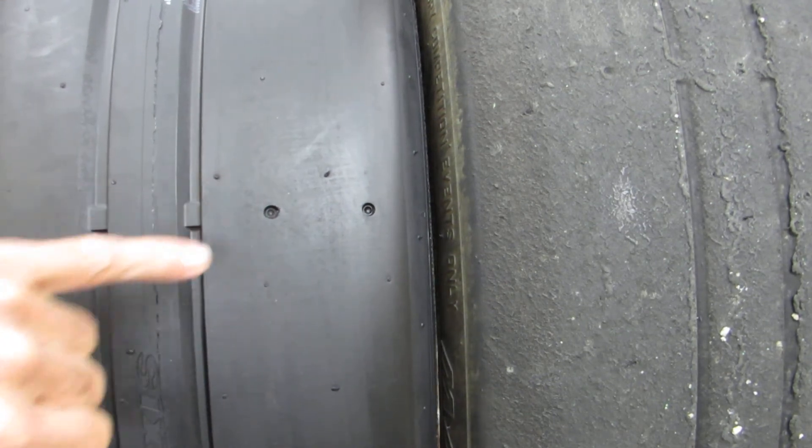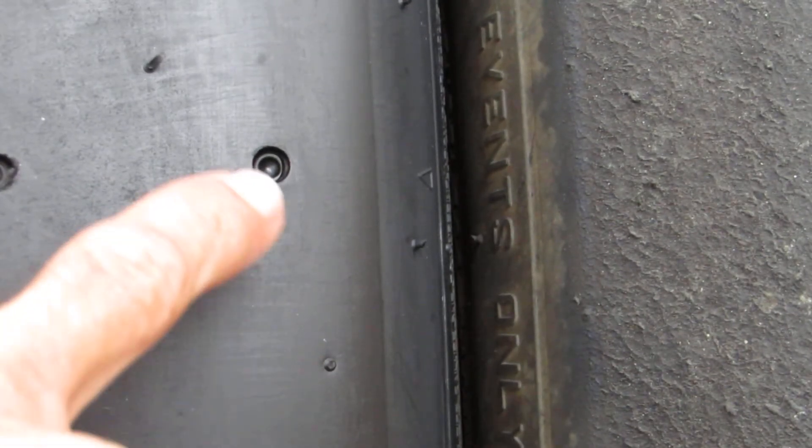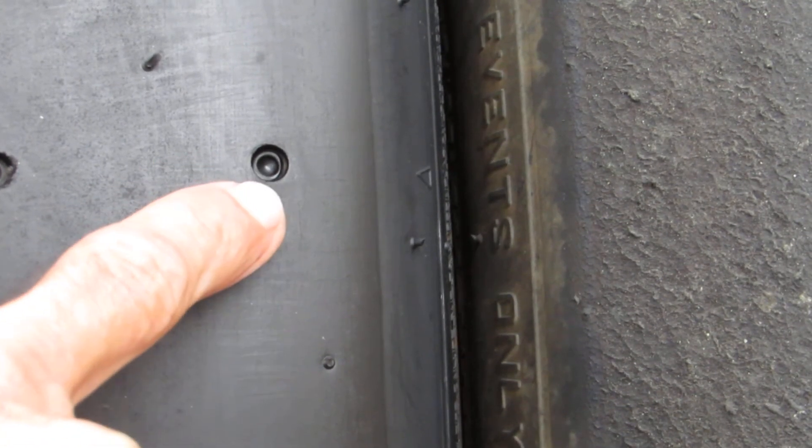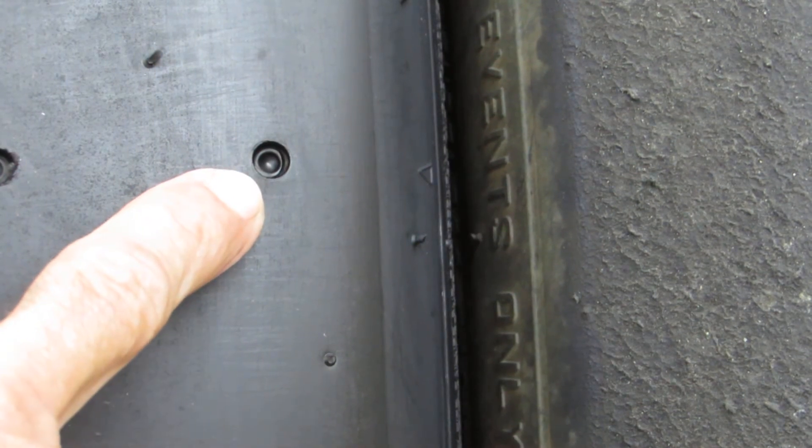Now these little dots here, if you ever wondered what these are, I'm going to zoom in here. See if it'll pick them up. You'll see this dot and it's actually a dot within a dot. You'll see a circle, a tread wear indicator there.